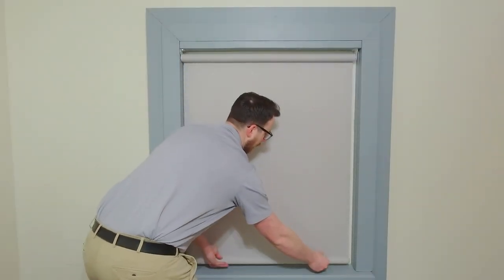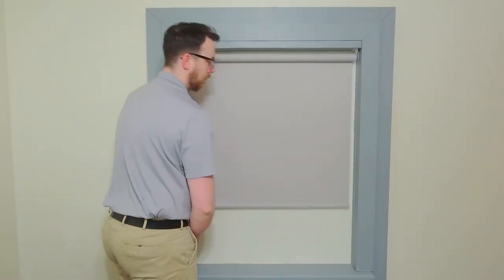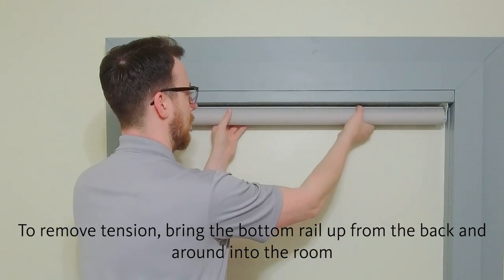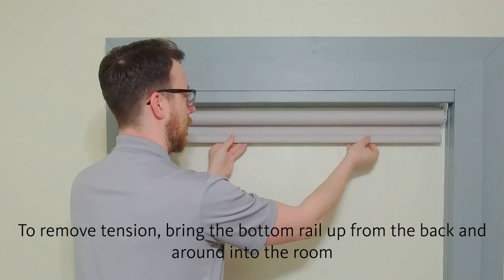If you lower your shade and it doesn't stay at the lower limit, the lift has too much tension. To remove tension, bring the bottom rail up from the back and around the roll into the room.